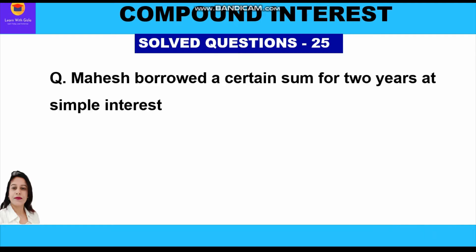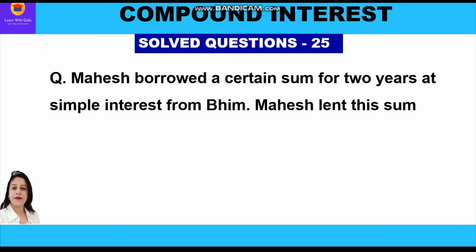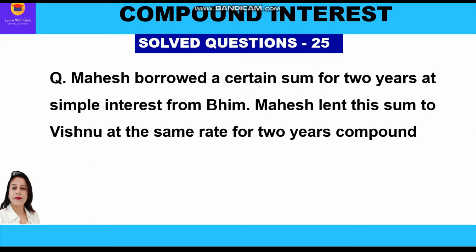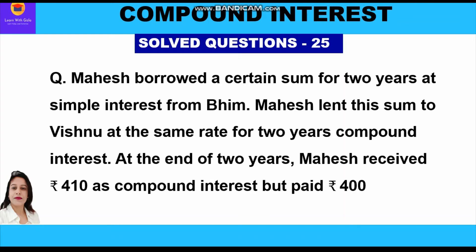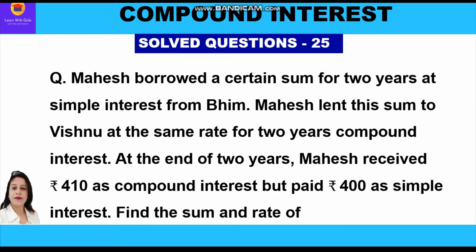for two years at simple interest from Bheem. Mahesh lent this sum to Vishnu at the same rate for two years at compound interest. At the end of two years, Mahesh received rupees 410 as compound interest but paid rupees 400 as simple interest.